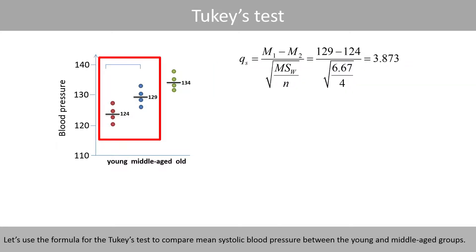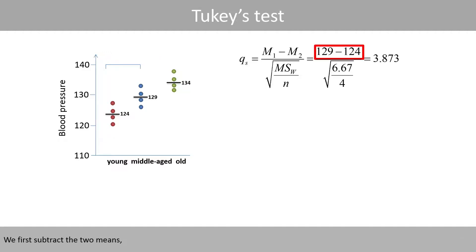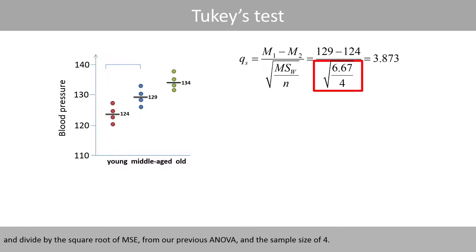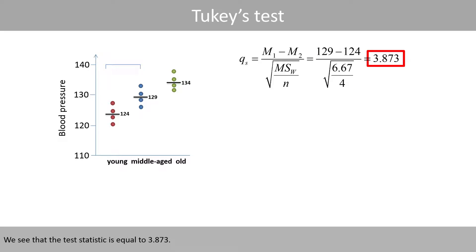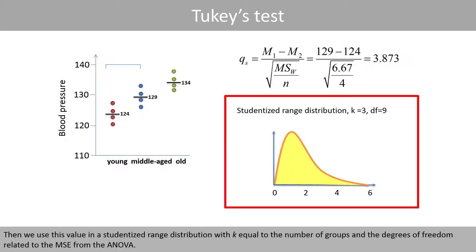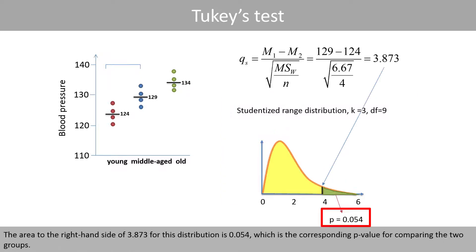Using the Tukey's test formula to compare the mean systolic blood pressure between the young and middle-aged group, we first subtract the two means and divide by the square root of the MSE of 6.67 from our previous ANOVA and the sample size of 4. The test statistic is equal to 3.873. We then use this value in a studentized range distribution with k equal to the number of groups and the degrees of freedom related to the MSE from the ANOVA. The area to the right-hand side of 3.873 is 0.054, which is the corresponding p-value.